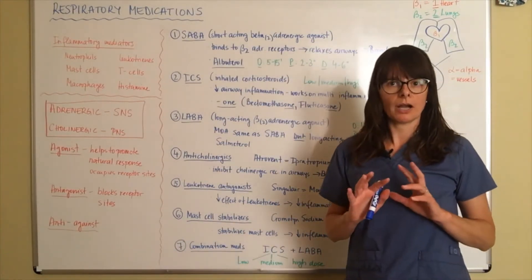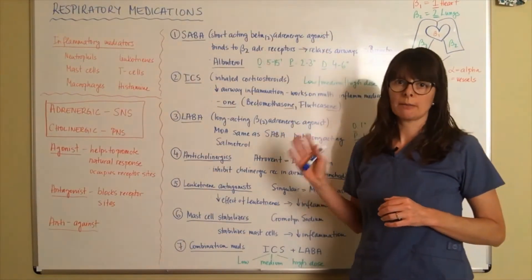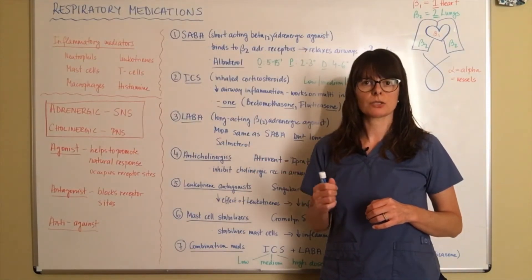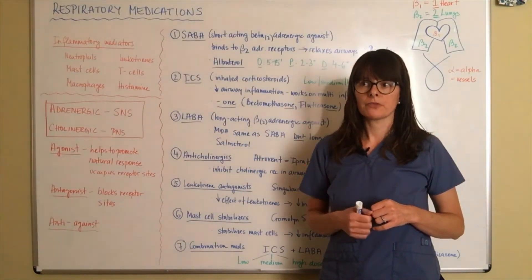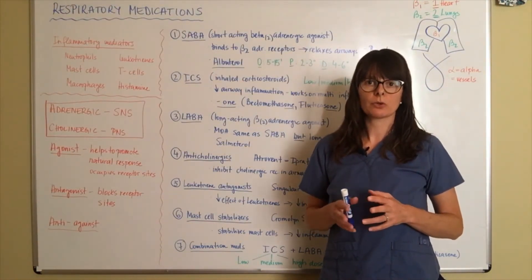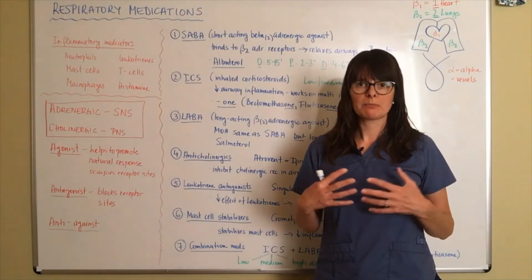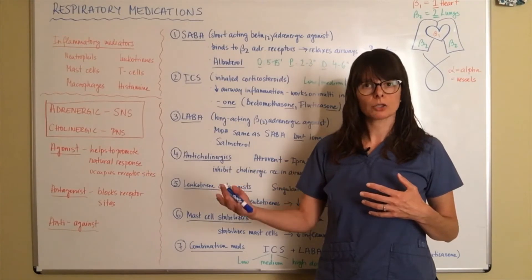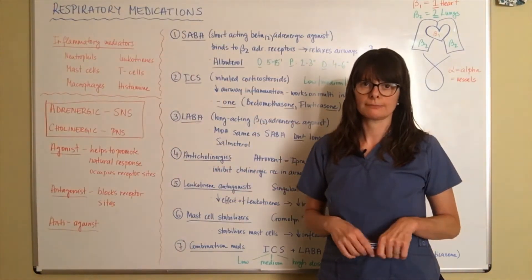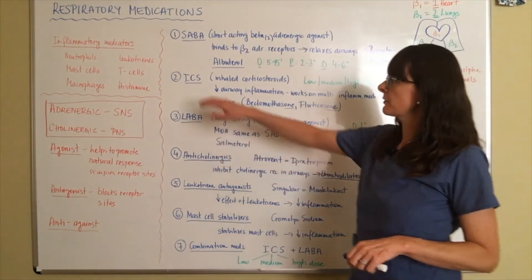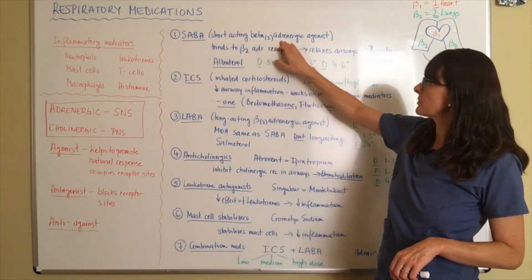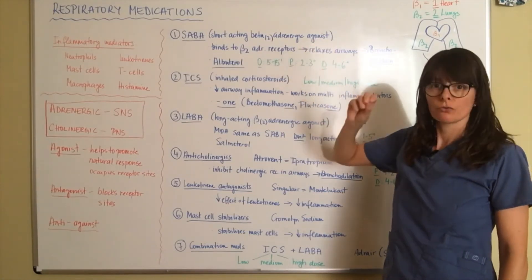So back to our respiratory medications. So there are a variety of classifications there. This mostly applies to asthma, but they can also be used in conditions such as chronic obstructive pulmonary disease, emphysema, maybe cystic fibrosis, or for acute respiratory disorders such as bronchitis, where there might be some acute inflammation, not chronic like asthma, where the patient might benefit from a short course of one of these medications. So let's look at that. So number one, I've written out SABA and SABA stands for short acting beta-2 adrenergic agonist.